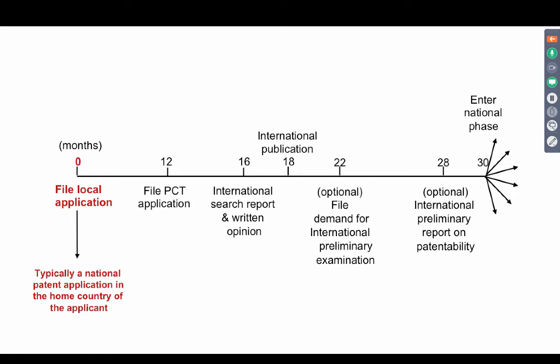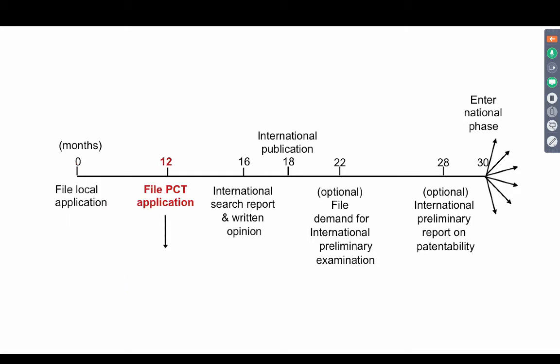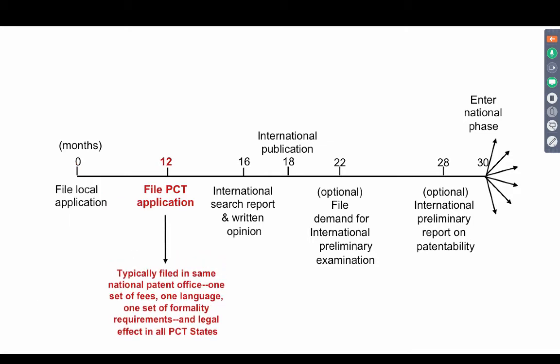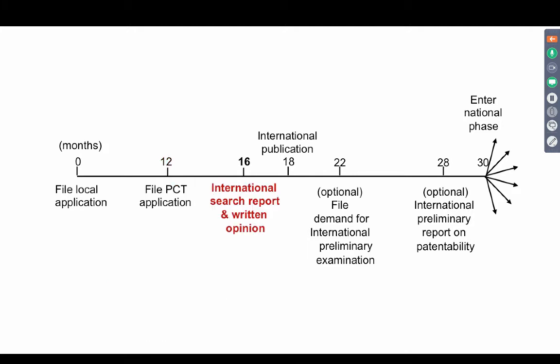Typically, a national patent application is filed in the home country of the applicant. If you choose India and file a local application, within 12 months you have to file a PCT application. The PCT application is typically filed in the same national patent office with one set of fees, one language, one set of formality requirements, and legal effect in all PCT states. Though it has to be translated, it has got legal effect in all the PCT states.